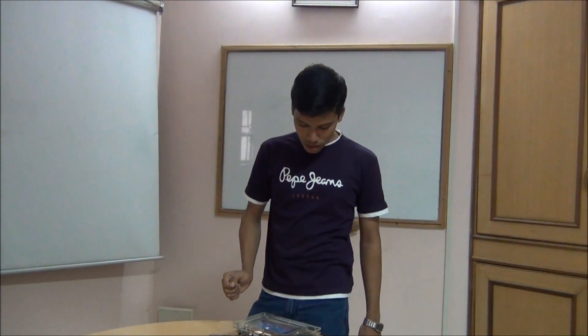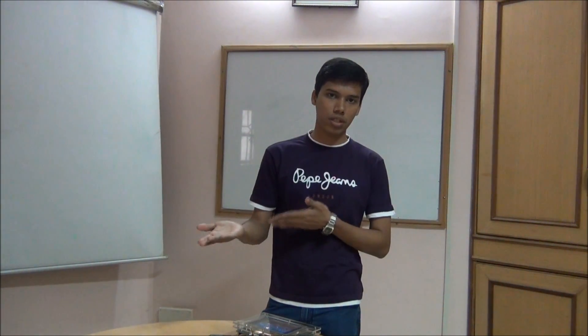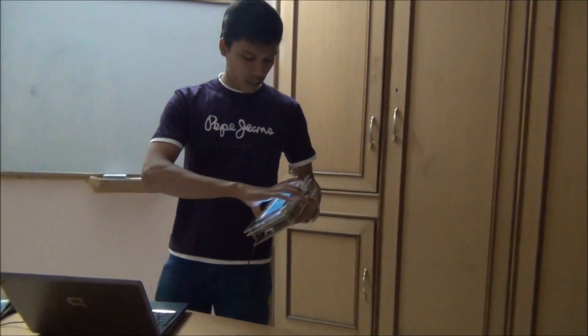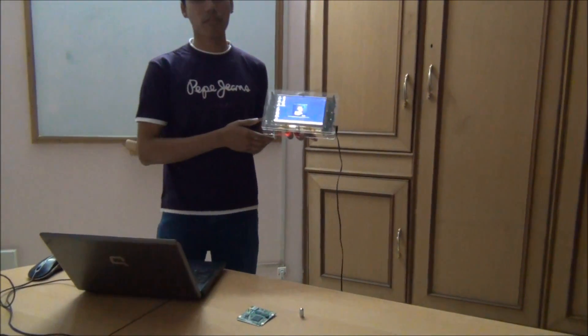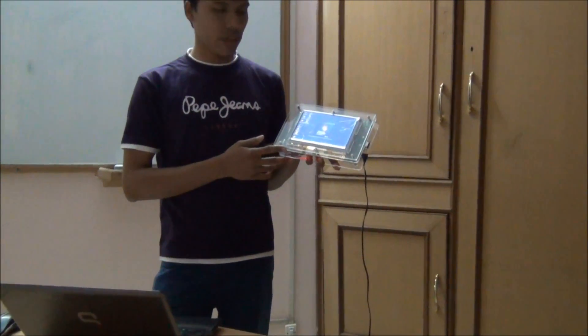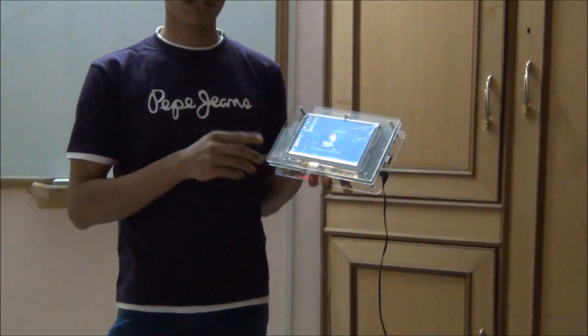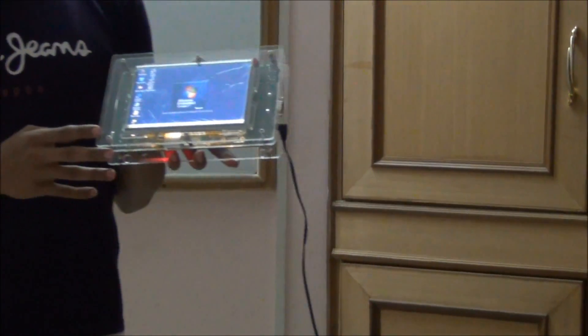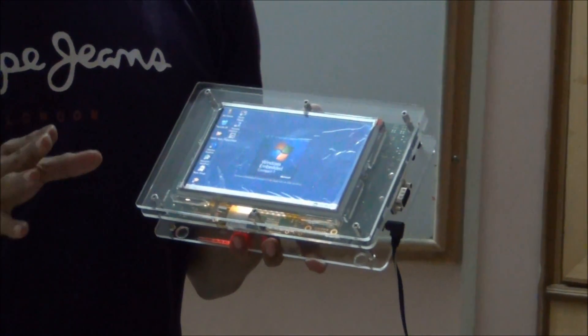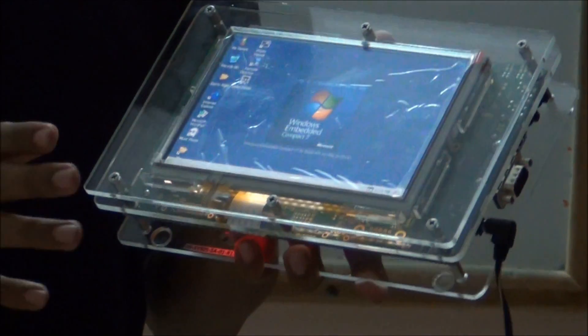I would like to explain about Windows Embedded Compact 7 and the feature differences between Windows CE 6.0 and Windows Embedded Compact 7. We have ported Windows Embedded Compact 7 based on the IMX 51. There are a lot of differences between the previous version, Windows CE 6.0, and Windows Embedded Compact 7.